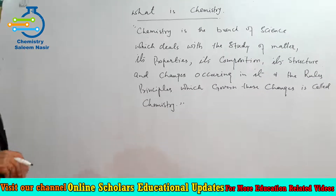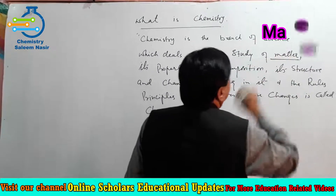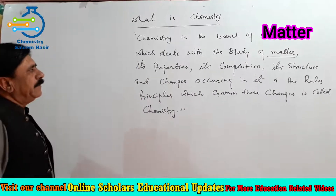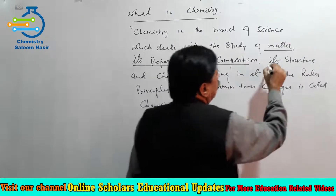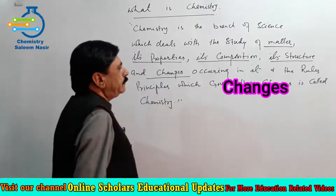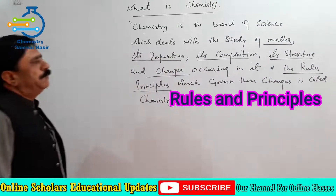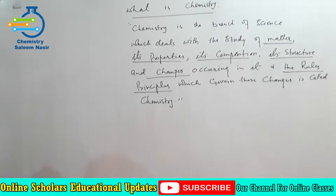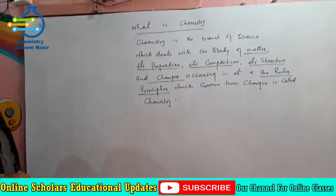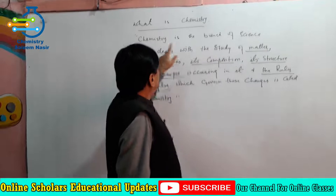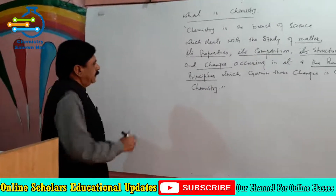Students, in that definition we have mentioned various aspects: that is, matter, its properties, its composition, its structure, and changes, and the rules and principles. Now it is very important to address all these aspects which have been mentioned in this definition. These aspects are firstly, matter.